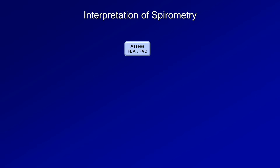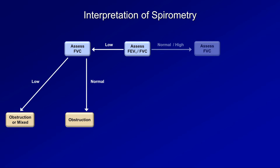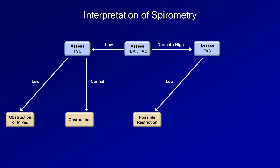In the diagnostic flowchart for interpreting PFTs, the first step is always to assess the FEV1 to FVC ratio. If it's low, assess the FVC: if the FVC is normal, the patient has obstructive lung disease; if the FVC is low, the patient may have severe obstructive lung disease alone or a mix of obstruction and restriction. If the ratio is normal or elevated, assess the FVC: if the FVC is low, the patient may have restrictive lung disease; if it's normal or high, the patient has normal lung mechanics.